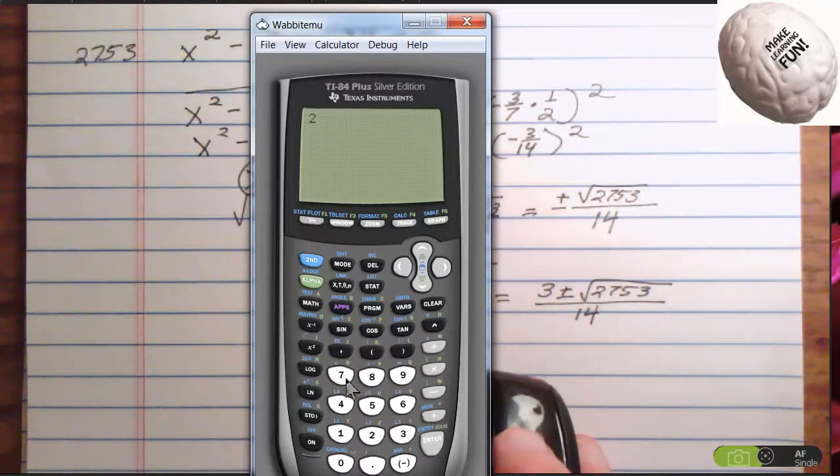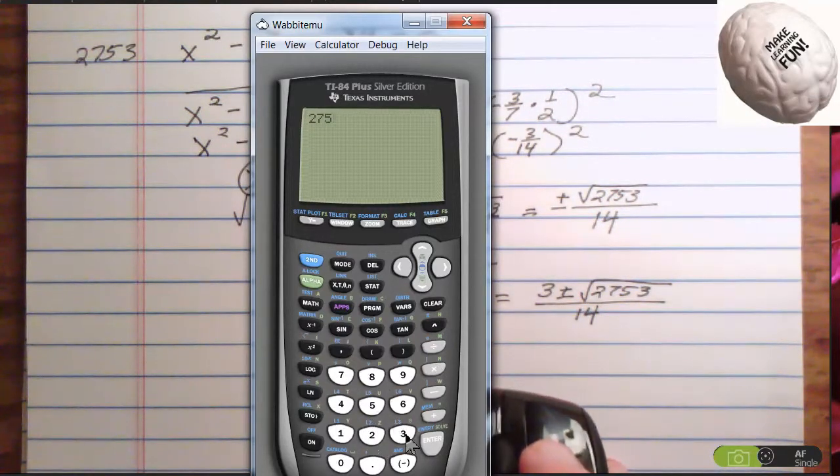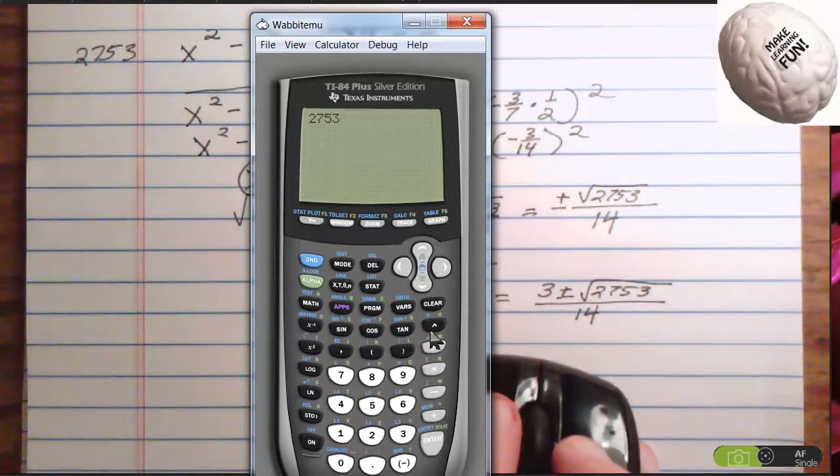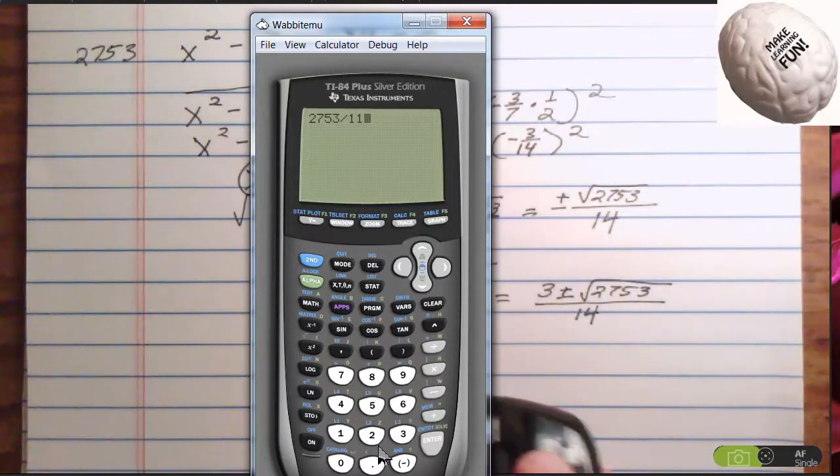Alright. Let's try 2753 divided by... Well, 9 won't work if 3 won't work. 8 won't work because it's an even number. I tried 7. I tried 7. Let's try 11. Let's try 11. Divided by 11.